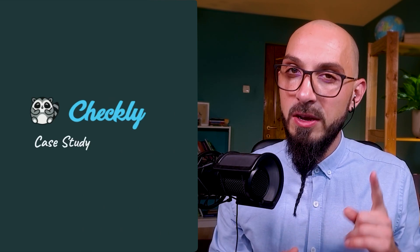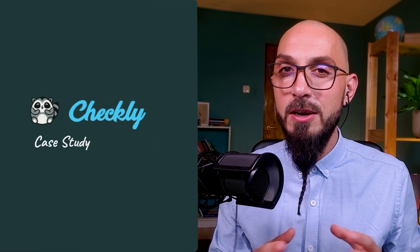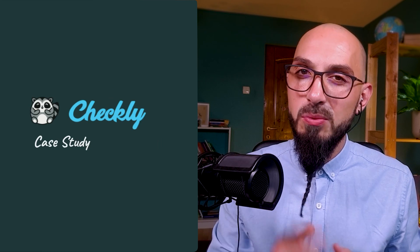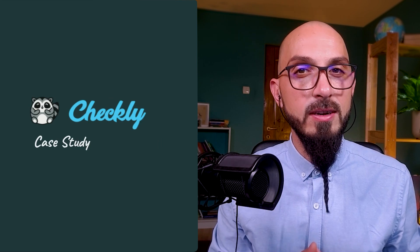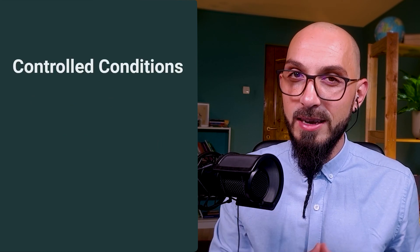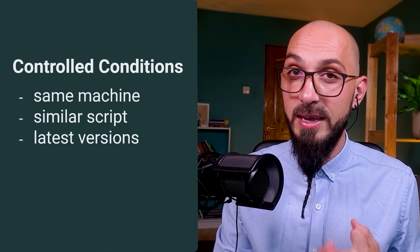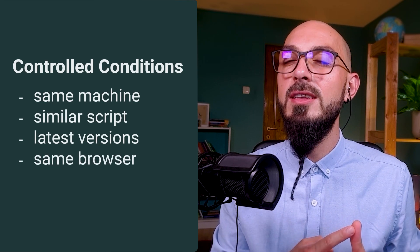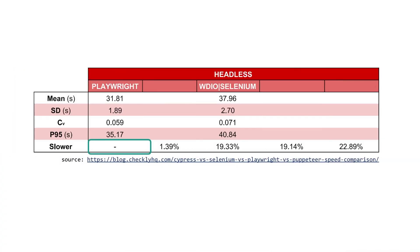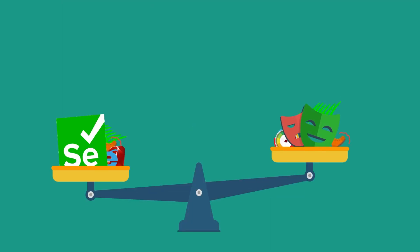The next item on our list is execution speed. It's quite hard to measure the speed of automation tools, but the guys at Checkly did a relevant case study. They compared the performance of a number of browser automation libraries, including Playwright and WebDriver.io. For a fair comparison, every test was run sequentially on the same machine. Scripts are not identical but are very similar. They used the latest versions of the tools, the same browser — Headless Chrome — and did thousands of repetitions. Playwright was the fastest of the five measured tools. Compared to it, WebDriver was almost 20% slower.